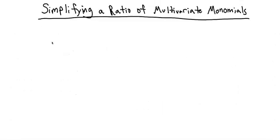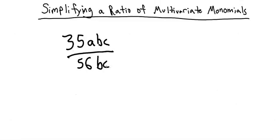Now let's get started. Looking at the example 35abc over 56bc, we want to find the greatest common factor of 35 and 56.